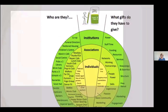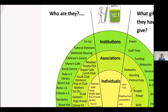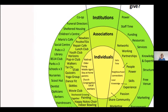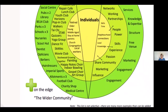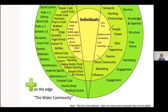If we look at the institutions in the Stockwood community where I live and was working, we have institutions such as the shops, the co-op, funeral directors, sheltered housing — there are six sheltered housing establishments in Stockwood. We have a fantastic children's centre, Mario's Cafe, a social centre, a fantastic library, two pubs, a social club, the BS14 club, three parks, three schools, a nursery, a scout hut, dentist, opticians, barbers, hairdressers, a sports club, three allotments, football club, charity shop, medical centre — the list goes on.